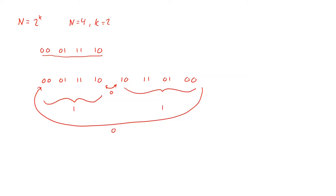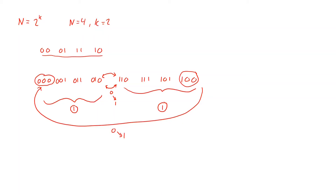For the first half of the sequence we add a zero at the beginning of each code — this does not introduce any new changes since the same digit is prepended throughout. For the second half we add a one to the beginning of each code — again no additional changes within that half. Between the two halves, this zero-to-one transition adds exactly one change, and cycling back from last to first also now gives exactly one change. So we again have only one variable changing at each step.